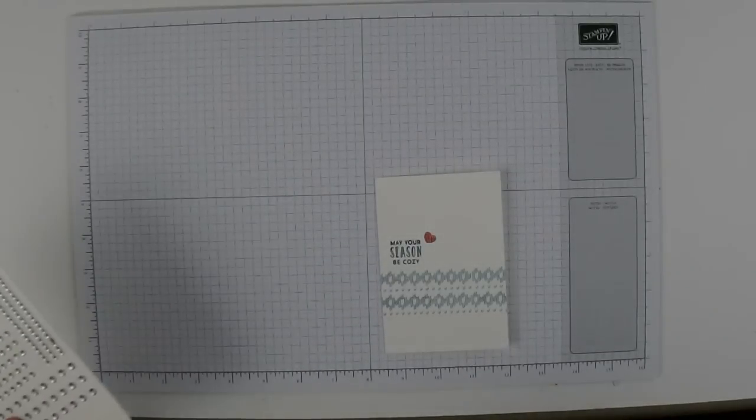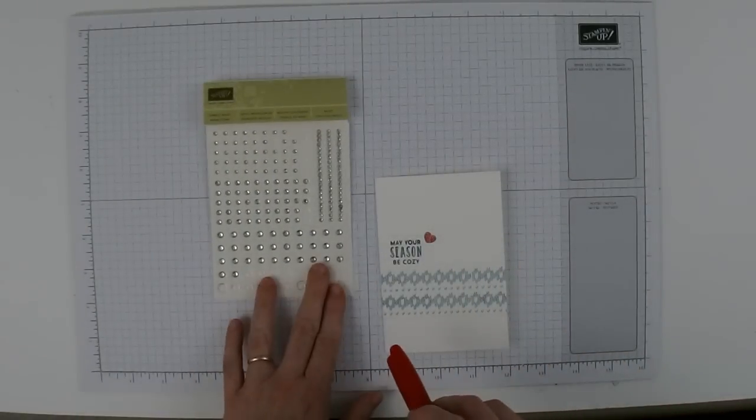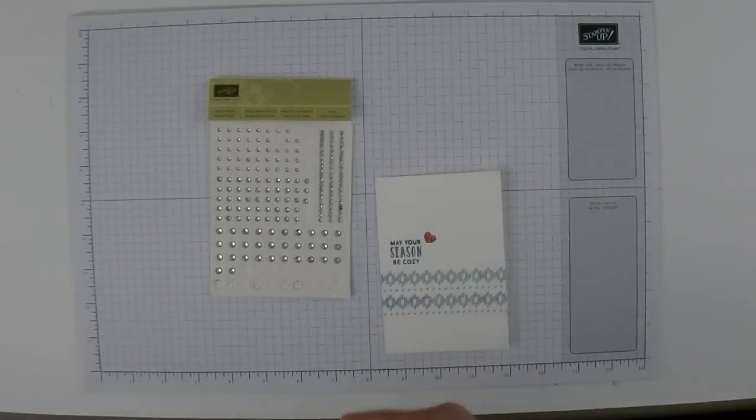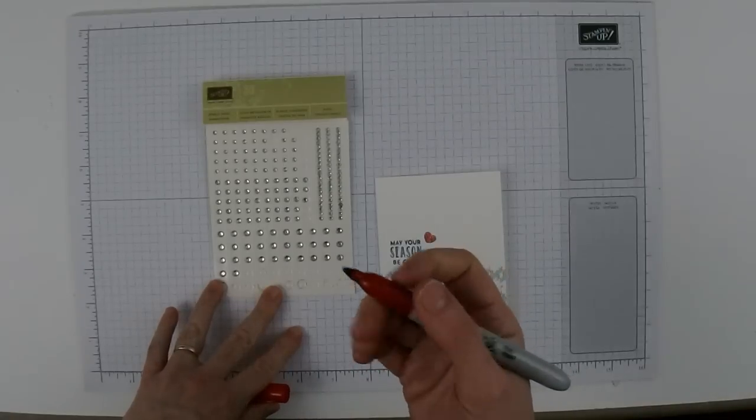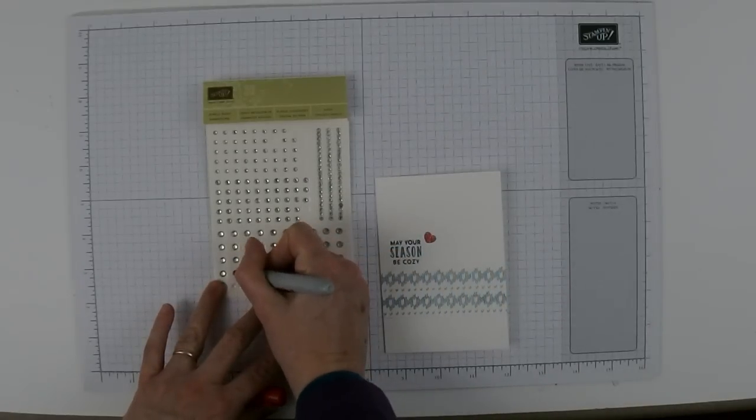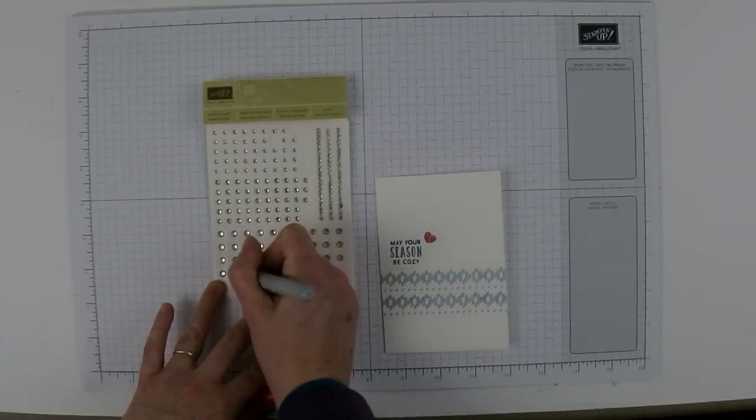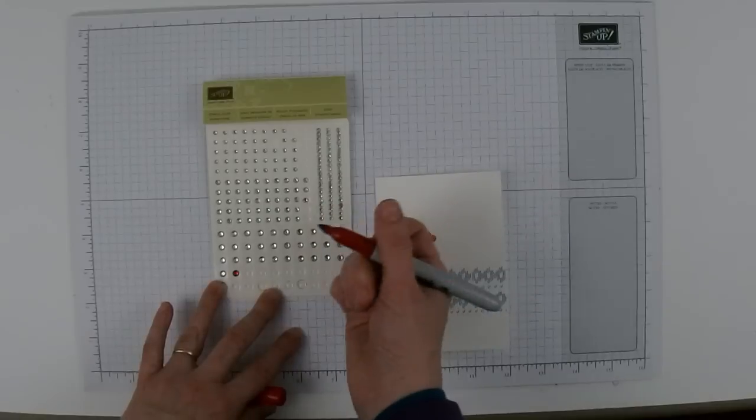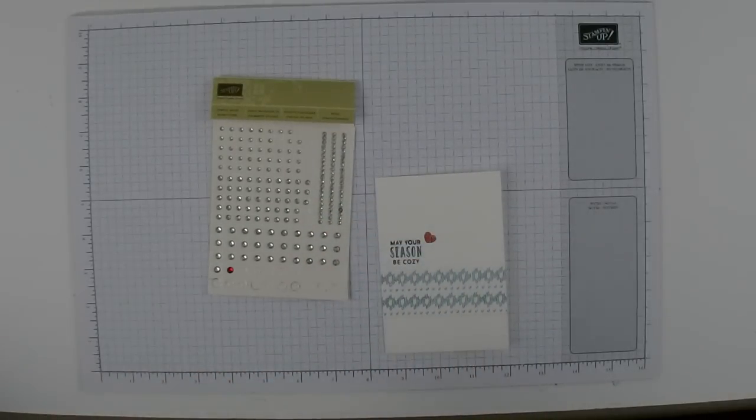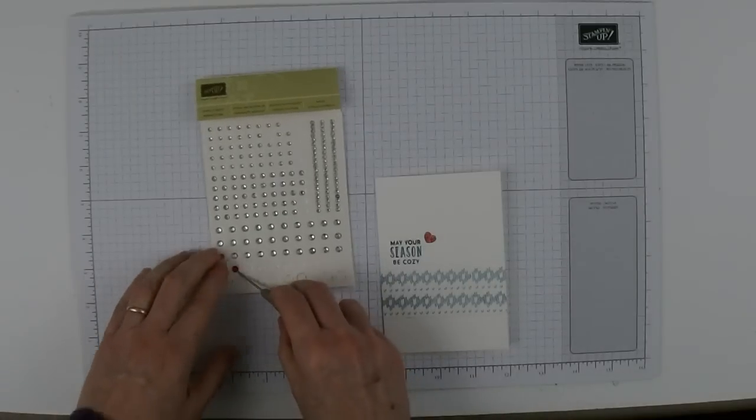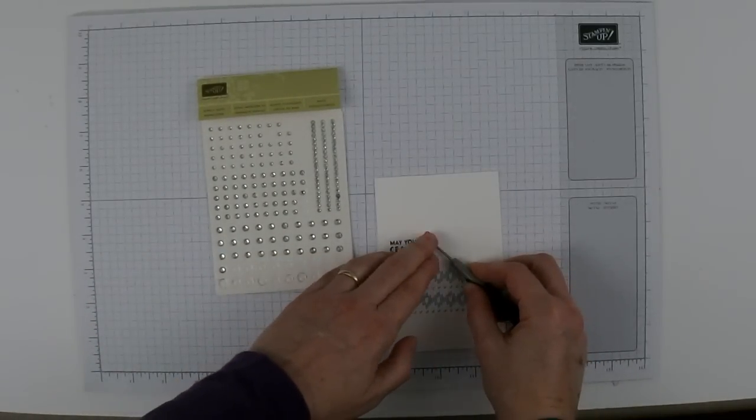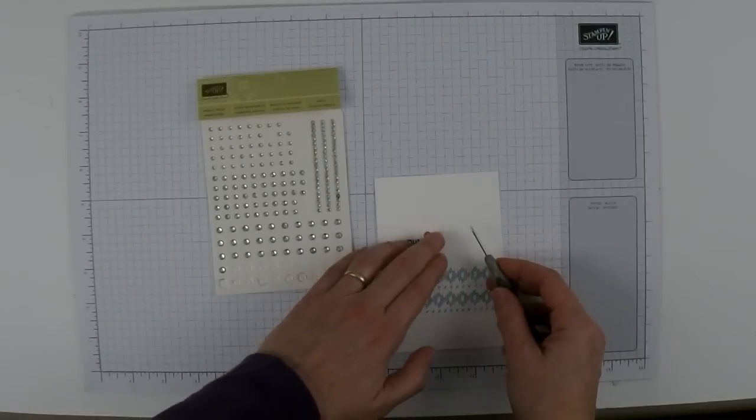Then to finish it off I want a little bling for the heart so I'm going to bring in my rhinestone jewels again. This time I'm going to take my red Sharpie. You don't have to color your rhinestones but I'm going to do it for this one. I just want it to look red. Sharpie stays on these rhinestone jewels really well. And then again I'm going to use my paper piercing tool to transfer it over to the little heart.